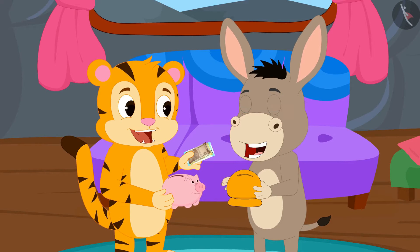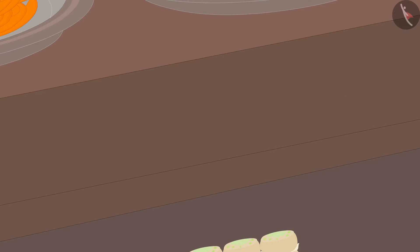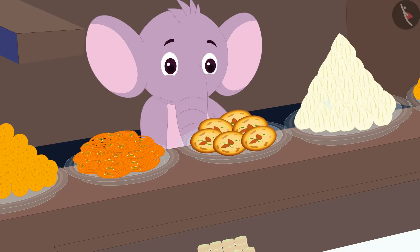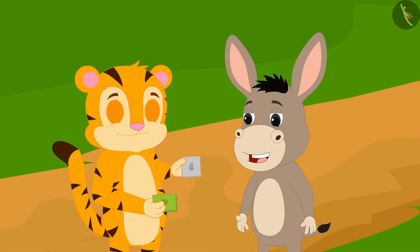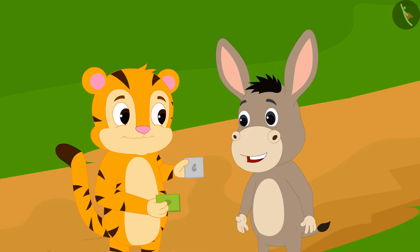Bholla and Sher Khan collected money and bought cashew barfi and pistachio barfi from Appur's shop. Sher Khan, let us divide this cashew barfi and eat it in two equal portions, Bholla said to Sher Khan.